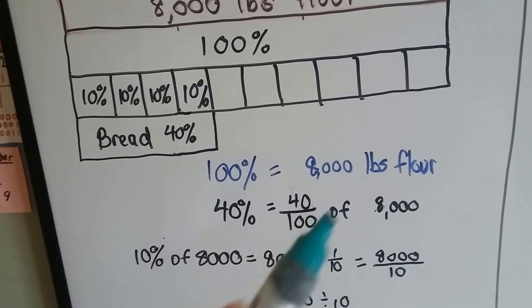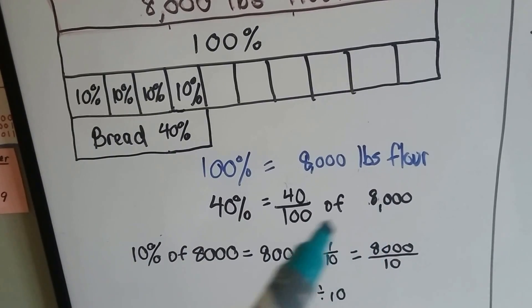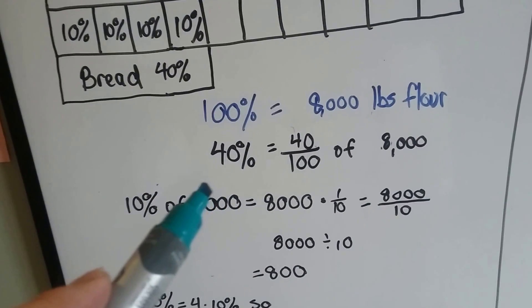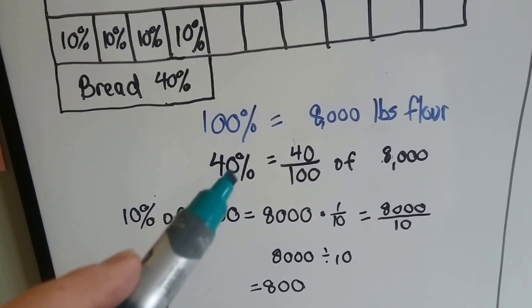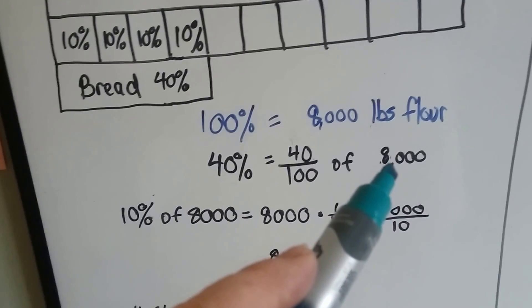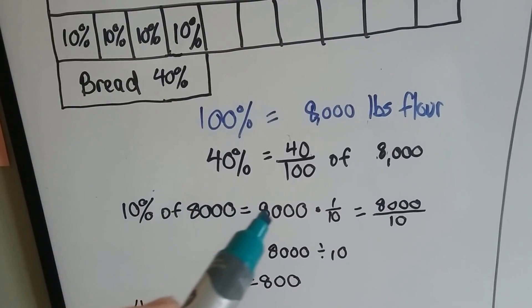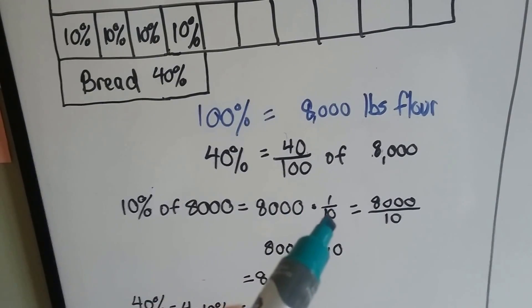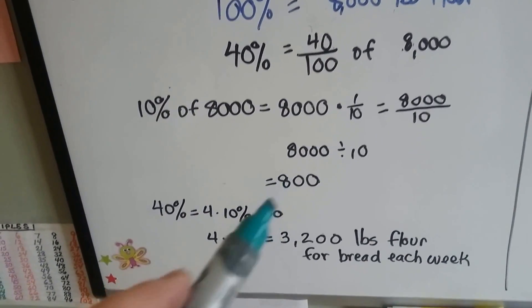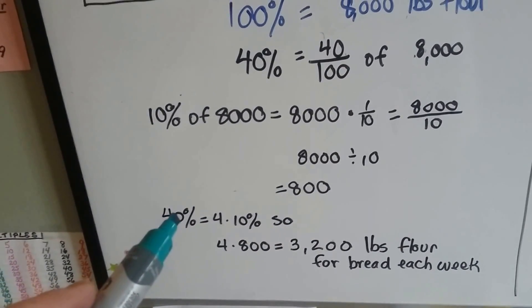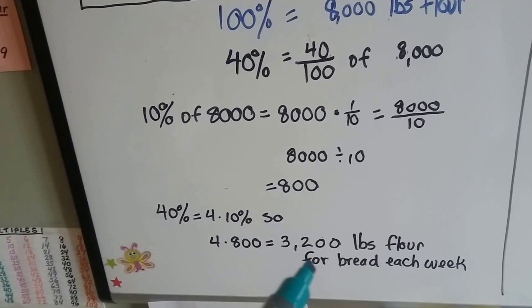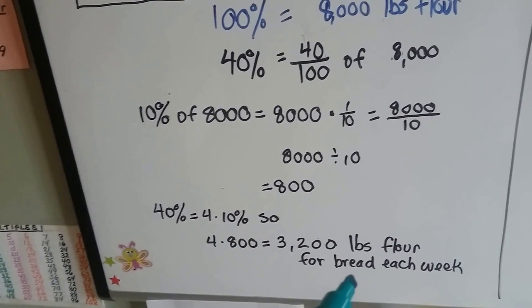Forty percent of it is used to bake bread. If 100% is 8,000, we need to find 40% of the 8,000. Forty percent is the same thing as 40 over 100. Let's break this 40% down to 10%, and then we'll find out what 10% is of 8,000. 10% of 8,000 is 8,000 times 1 tenth. It's 8,000 divided by 10, and that turns out to be 800. 40% is equal to 4 times 10%, so 4 times 800 is 3,200 pounds of flour each week for the bread.